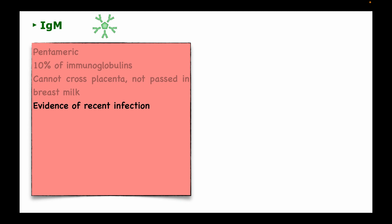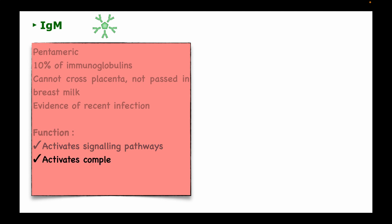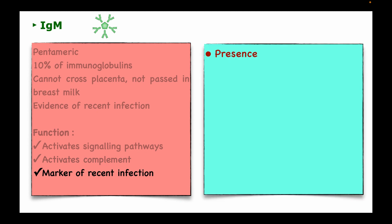Immunoglobulin M is formed earlier than any other immunoglobulin and serves as evidence of recent infection, since it is the first response to contact with antigens. Its specific functions include activating signaling pathways, activating the complement system, and serving as a marker of recent infection. The presence of immunoglobulin M in a newborn means the newborn is infected with a specific infection.